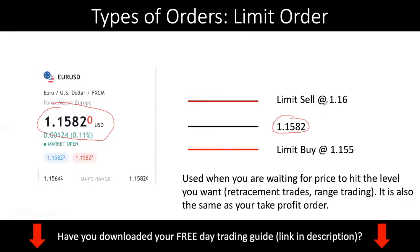If you want to buy at a better price, then you do a limit buy, which is basically lower. Now, the problem with using a limit order is that price might not go there, and if price does not go to that level, then technically you do not have a trade. Remember, with a market order you are guaranteed to get a trade and have an open position. But with a limit order, you just place the limit and wait.